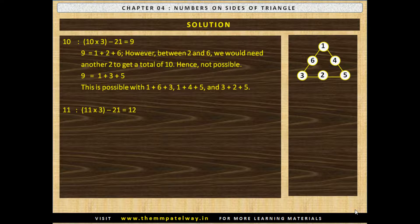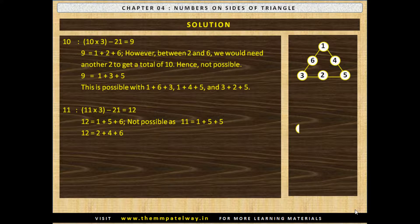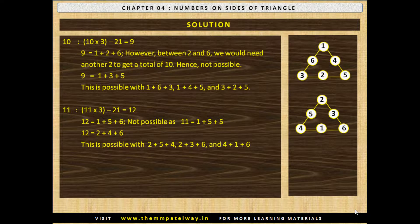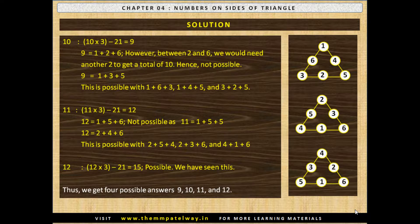Now let us see the possibility of getting a sum of 11. 11×3 minus 21 is 12. 12 equals 1+5+6, but this is not possible as 11 would equal 1+5+5. The other possibility of getting 12 is 2+4+6. This is possible with combinations 2+5+4, 2+3+6 and 4+1+6. The solution is shown. Now for a sum of 12: 12×3 minus 21 equals 15. We have already seen the possibility of getting a sum of 12 and the solution is shown again.